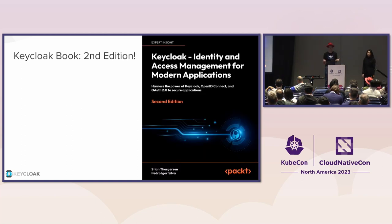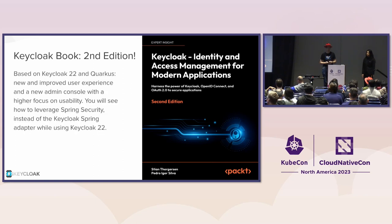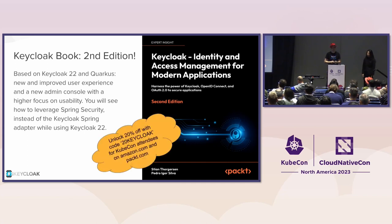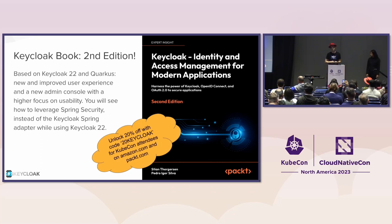There's also the Keycloak book, second edition, published and written by Stian and Pedro, being the project lead and another project maintainer. It's based on Keycloak 22 and the Quarkus edition. If you're new to Keycloak, have a look at the book. We also have it at the project pavilion at the Keycloak stand. If you want to get 20% off the book, use this discount code 20Keycloak — it's for all KubeCon attendees, usable on amazon.com and packt.com.